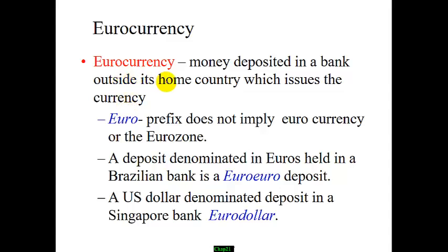Euro currency is money deposited in a foreign bank, so 'euro' does not mean the euro currency or eurozone. For example, a US dollar deposited in a European or other foreign bank is called a eurodollar. A euro-euro could be a euro deposit in another foreign bank.